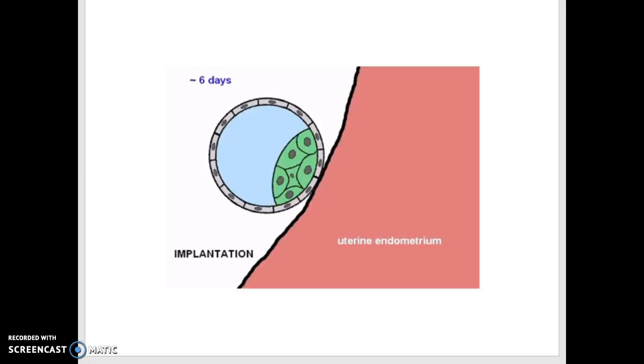On day six, implantation occurs. The blastocyst buries itself into the endometrium. There is no longer a zona pellucida and the outer layer of the cell is now called the trophoblast. The trophoblast will eventually develop into the cytotrophoblast which will progress to be a large part of the placenta.